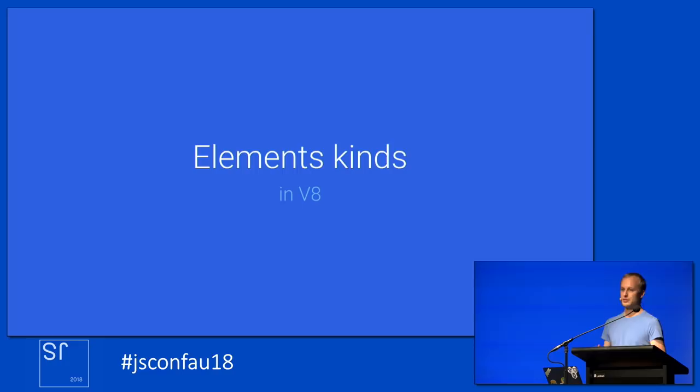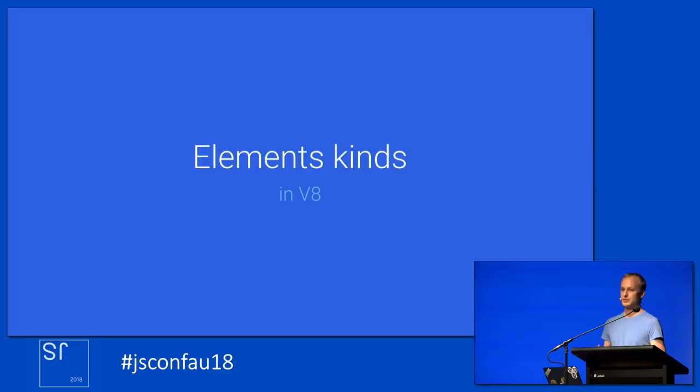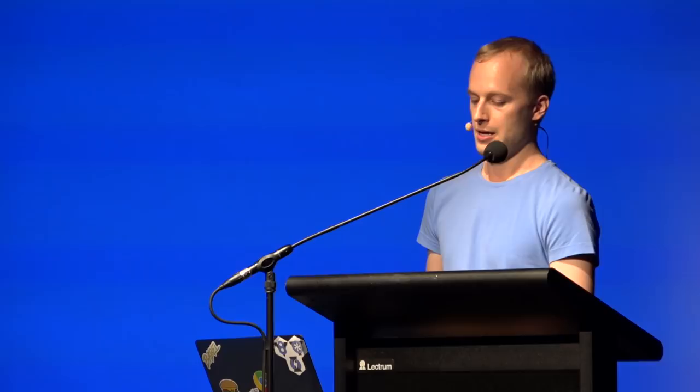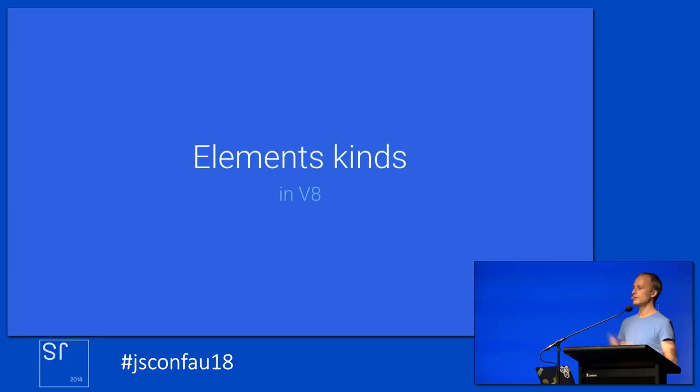JavaScript objects can have arbitrary properties associated with them. The names of these properties can consist of alphanumeric characters or even weird unicode characters. One specific case that JavaScript engines can optimize for are properties whose names are entirely numeric — more specifically, array indexes. In V8, array indexes are stored separately and treated specially. Internally, V8 calls these properties 'elements.' Objects have properties and values, and arrays have indexes that map to elements.